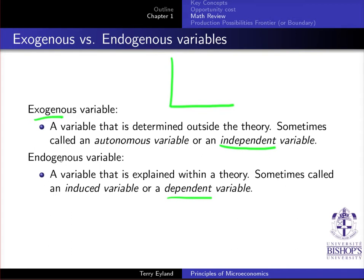The endogenous variable, on the other hand, is explained within the theory — it depends on what's going on there. The biggest thing to note is that if you're used to seeing 'independent variable' and you hear the word 'exogenous' or 'autonomous,' you can treat them as equal. And 'endogenous,' 'induced,' and 'dependent variable' can all be treated the same.